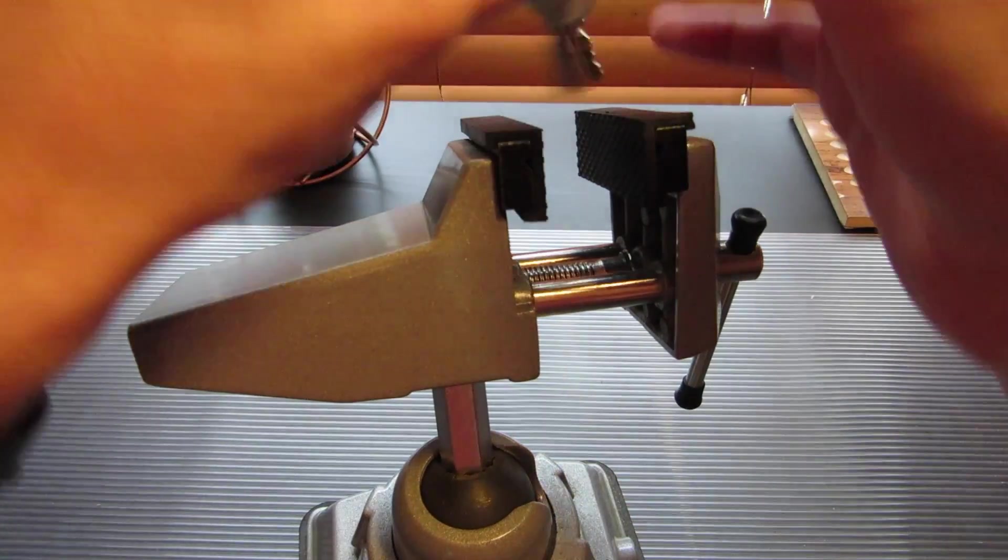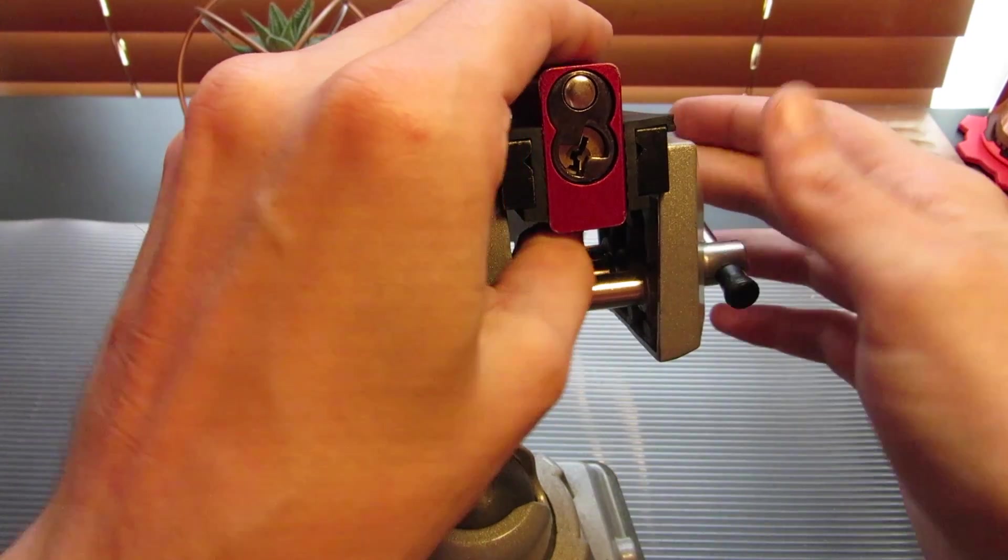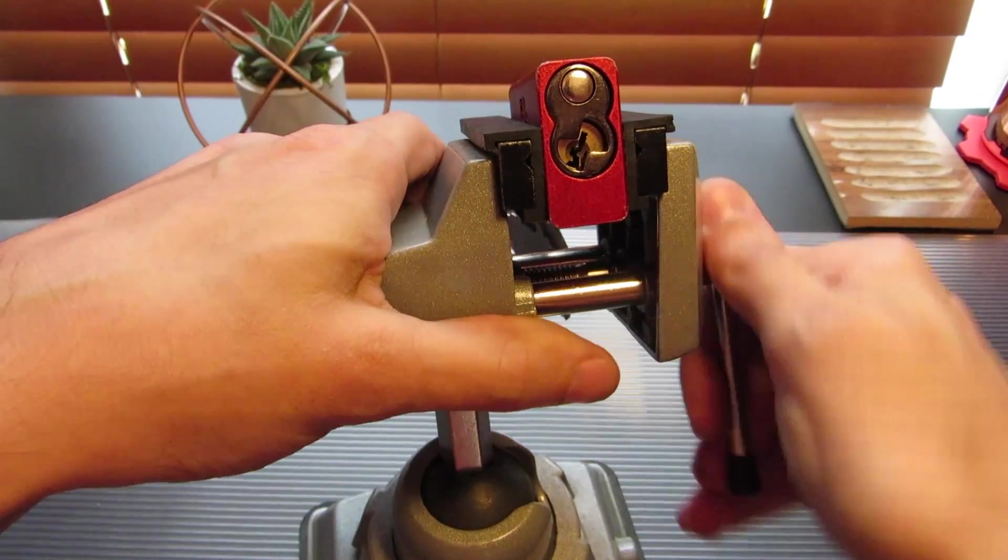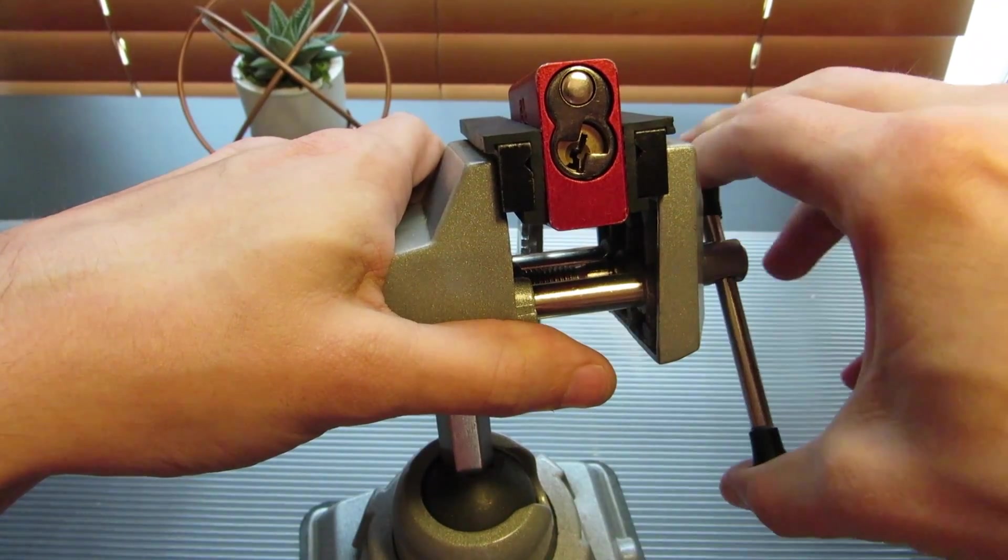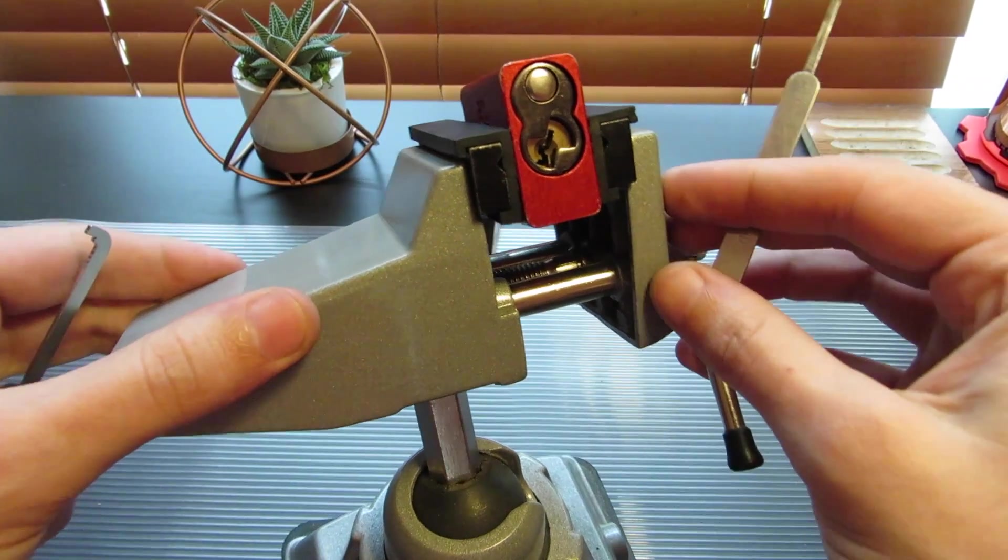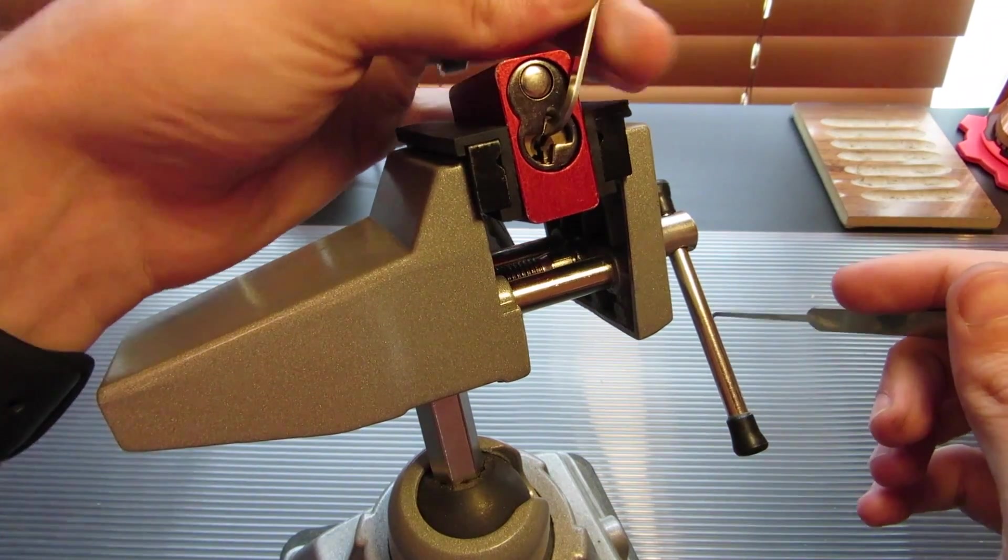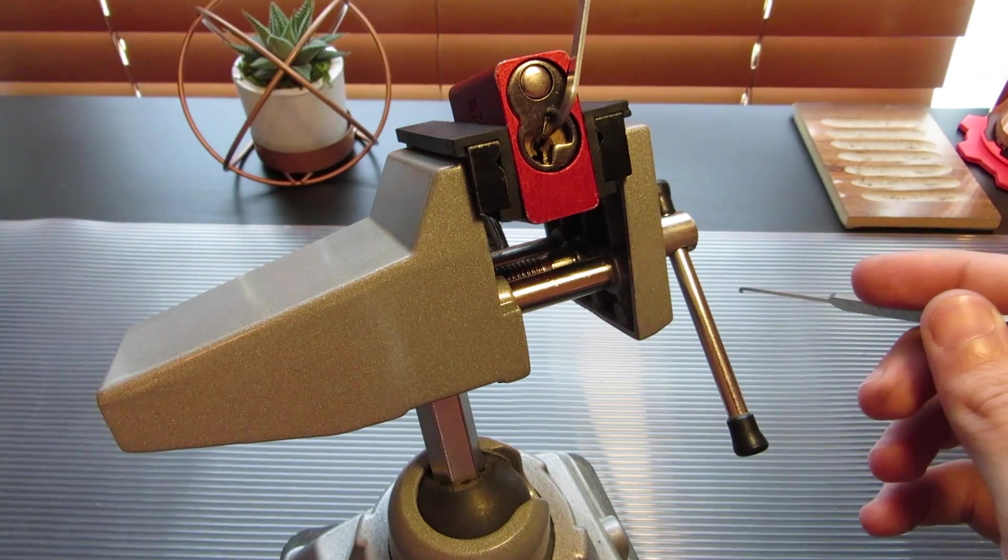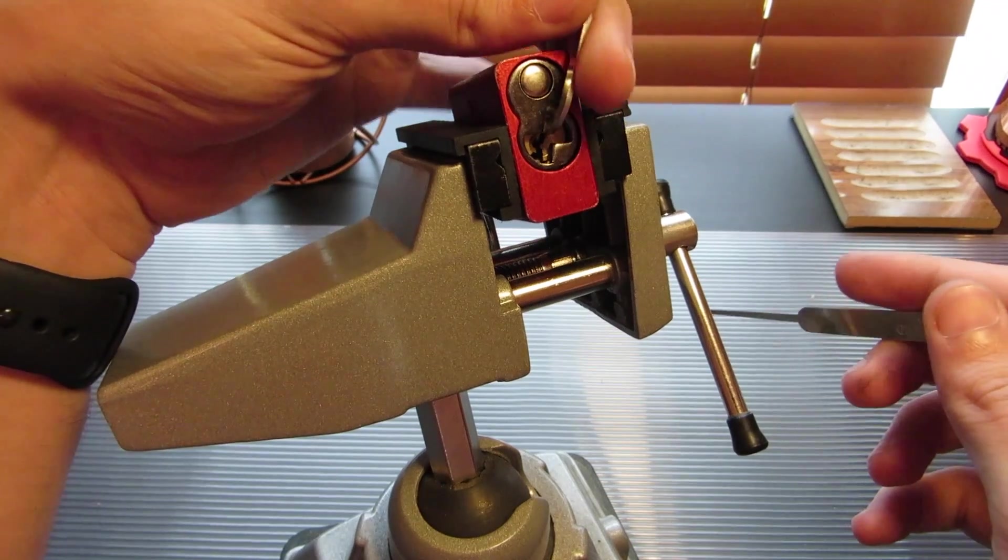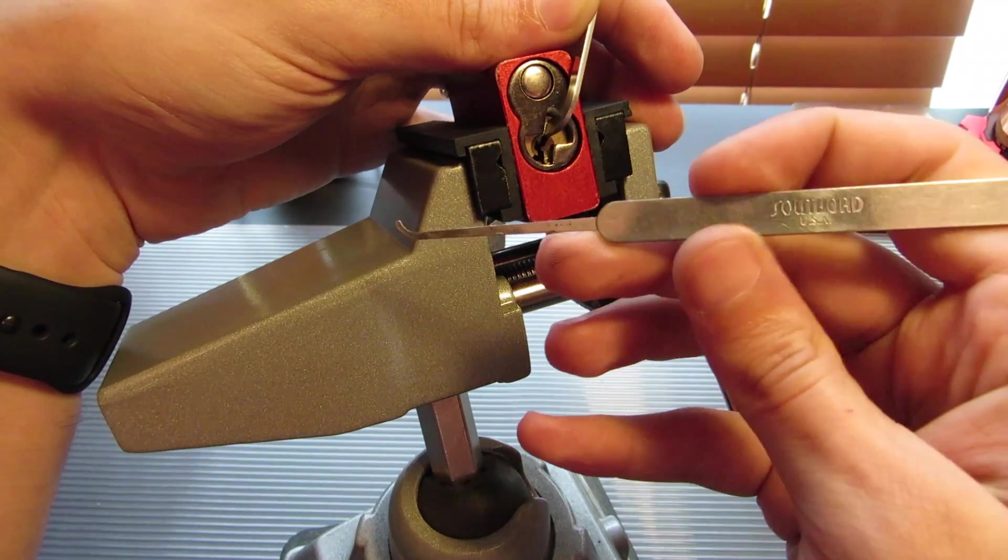Let's give it a shot. I haven't picked an American in a long time, I mean it's been probably a month or two. I'm very out of practice with these, so hopefully he doesn't have something too nasty in here and he takes it easy on me. I'm using Peterson's 0.050 top of the keyway and a southord deep hook.